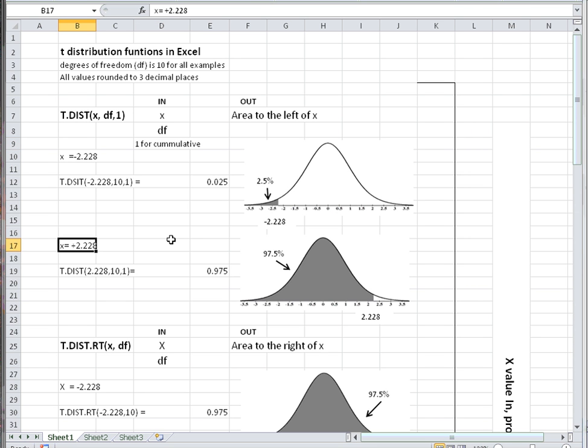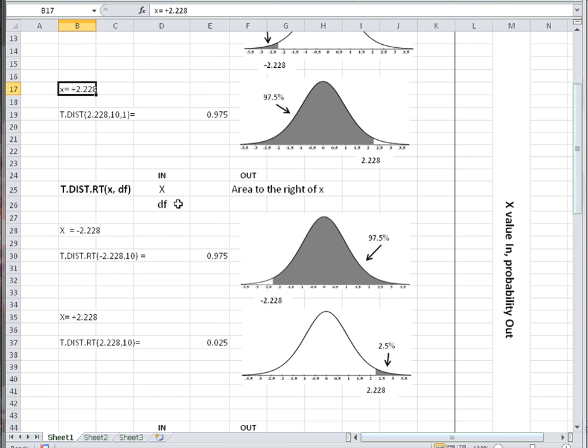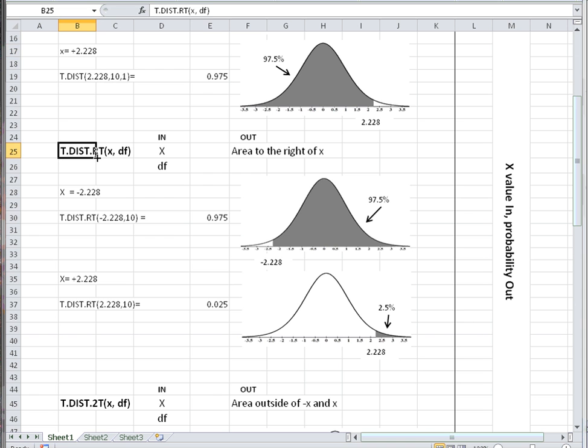For x equals 2.228, the area to the left is 97.5%. The T.DIST.RT is the opposite of the T.DIST.